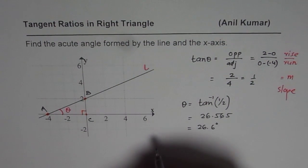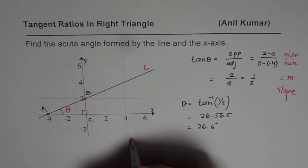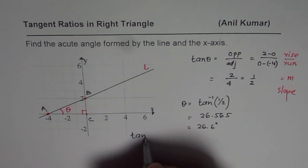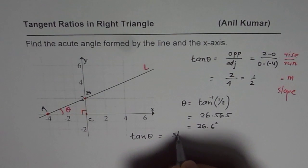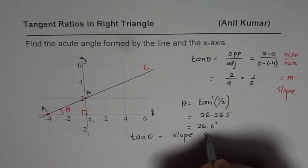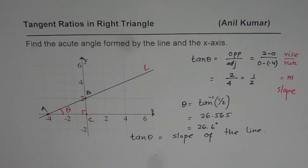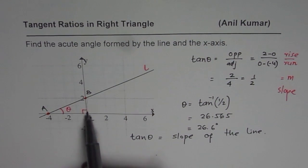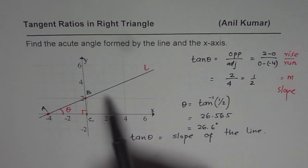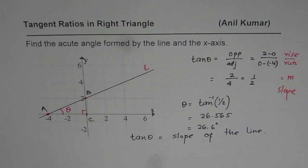Now, this is important to understand also that tan theta is equals to slope of a line. That is a good reminder. So, tan theta is slope of the line. Rise over run is indeed the slope. And slope of this line is half as you can see. And so, we can relate tan theta and find the angle with the slope. I hope that helps. Thank you and all the best.